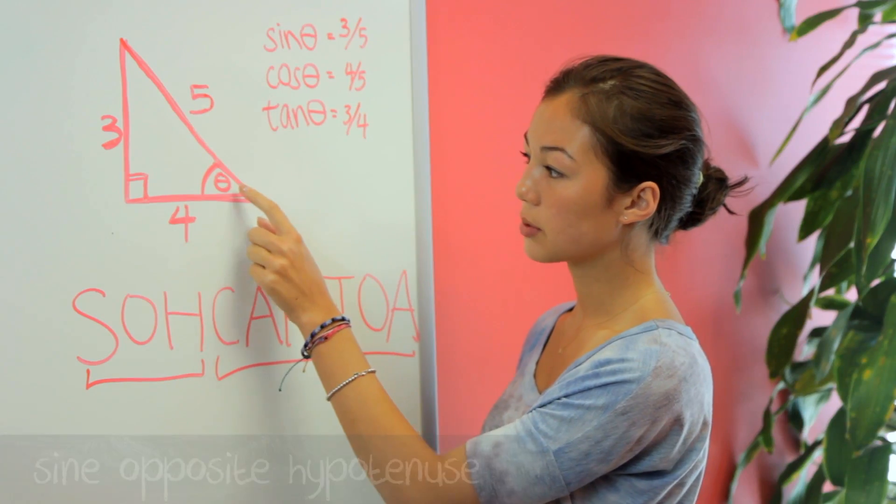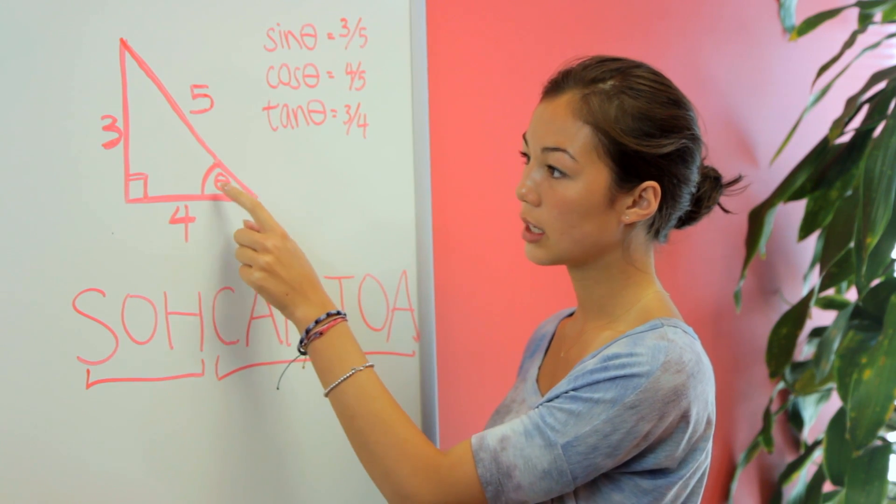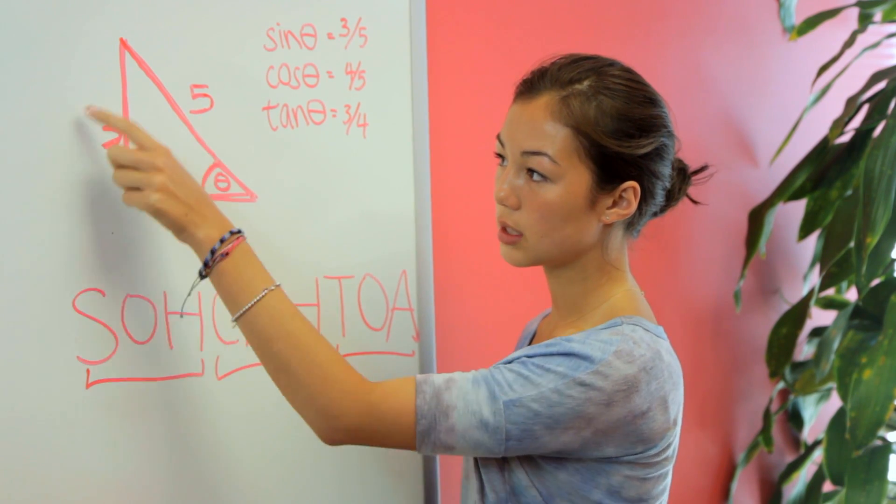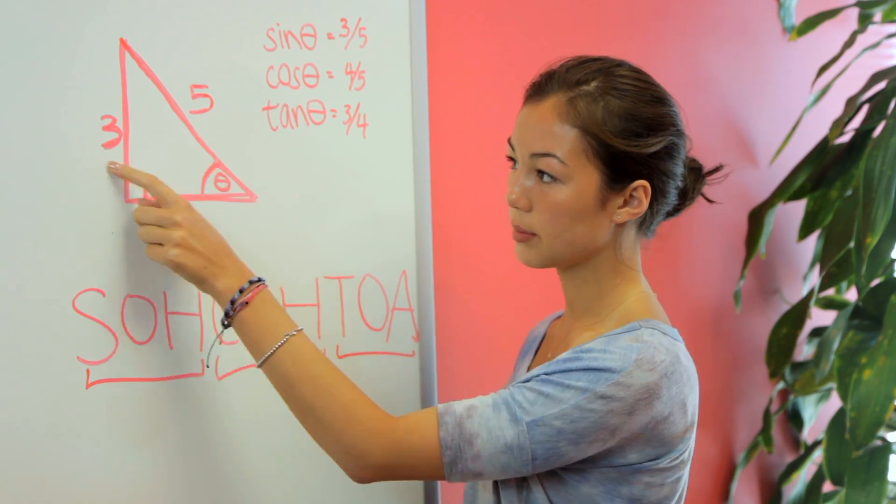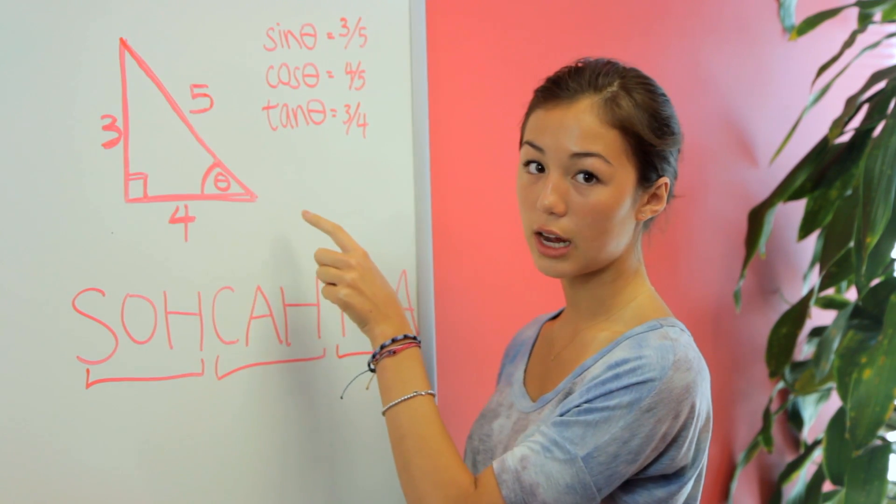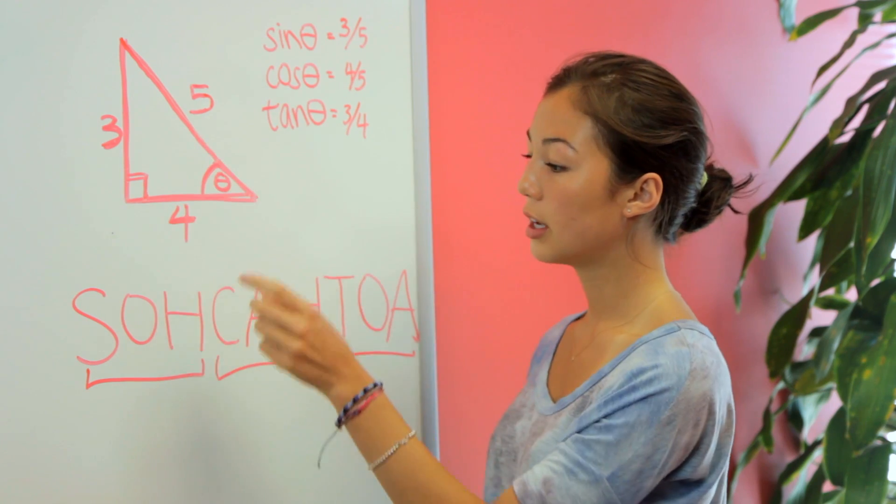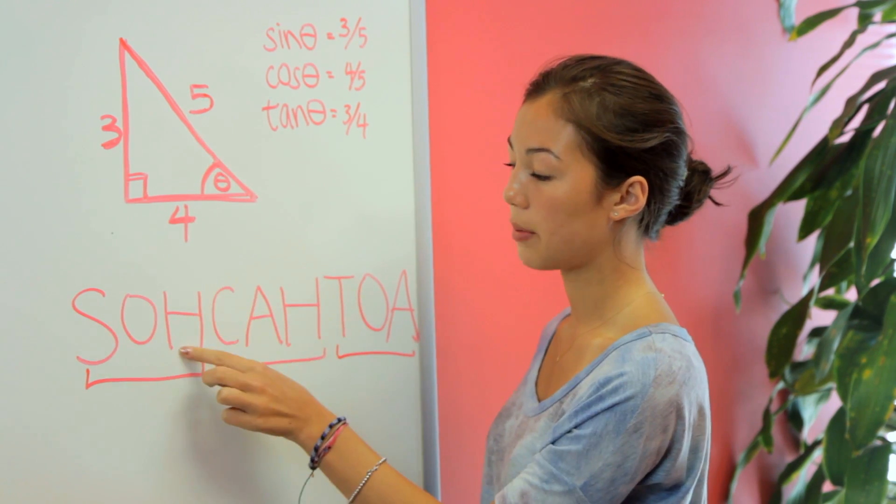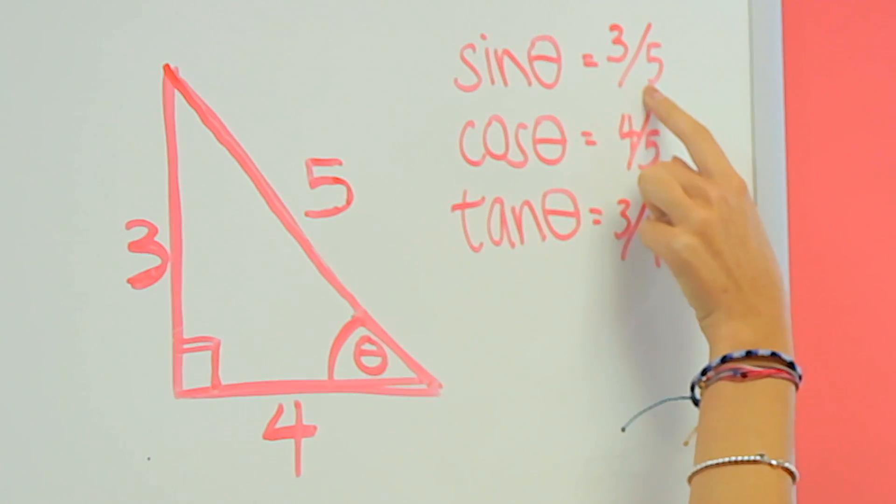So we're finding the sine of this, so we take the opposite, which is the opposite side here, 3, and the hypotenuse, which is always the longest side of the right triangle, so 5. We take the opposite over the hypotenuse, so we have 3 over 5.